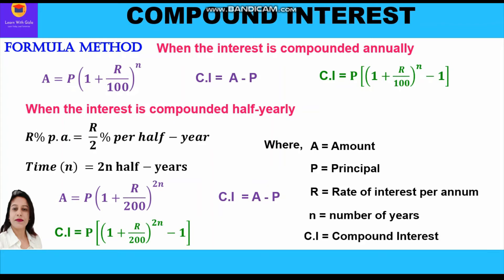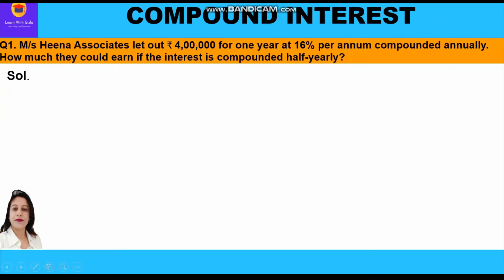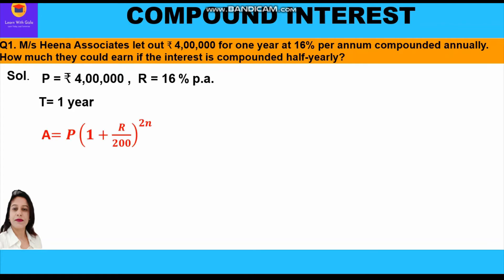Now let's start with the solution. Principal is rupees 4 lakh, rate of interest is 16 percent per annum, time period is one year. We shall apply the amount formula: A = P × (1 + r/200)^(2n). Putting in the values: 4 lakh × (1 + 16/200)^(2×1).